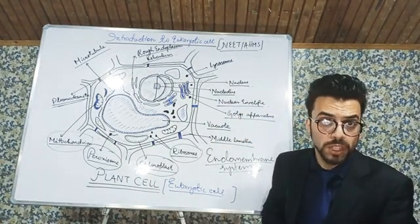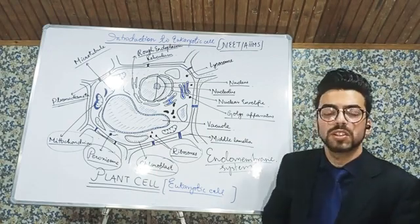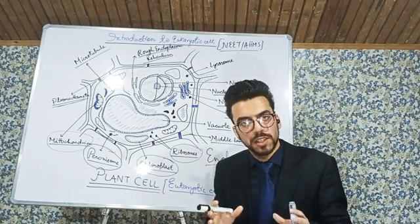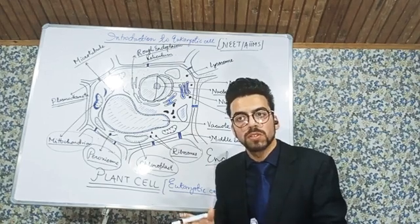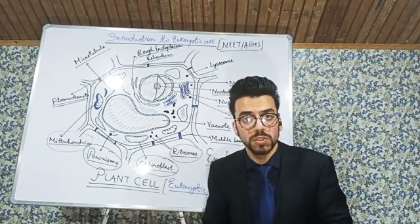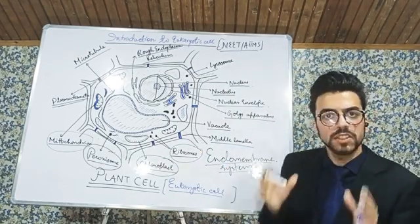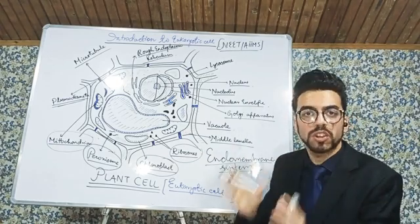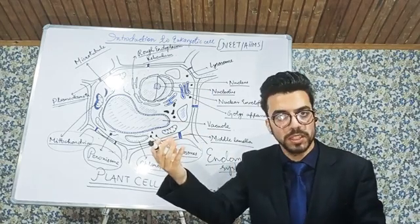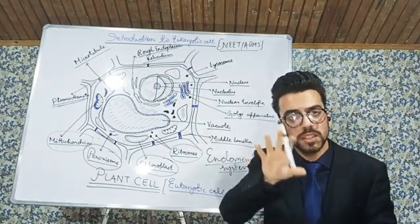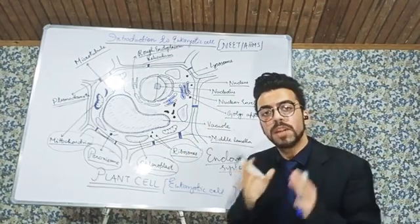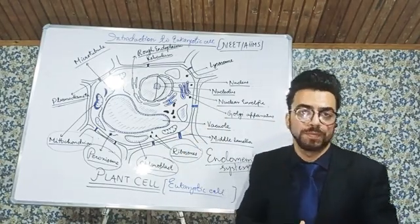Then there comes another important component of the eukaryotic cell, that is what we call the cytoskeleton. Cytoskeleton actually involves a lot of things. It's got a lot of structures like microfilaments, like there is microtubules. But overall, their role is to maintain the shape of cell, to maintain cell structure. The cytoskeleton is meant for maintaining the structure, the shape of a cell.